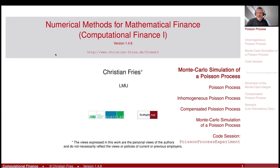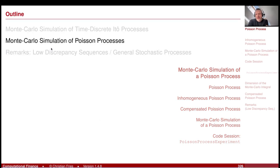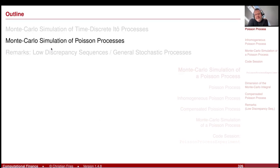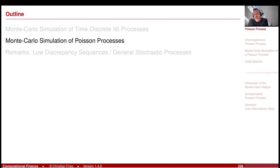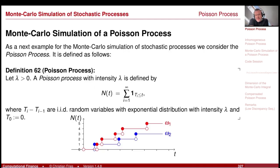Welcome to numerical methods. Another nice example of a Monte Carlo simulation of a stochastic process is that of a Poisson process. I like to show this to you because it is so different from what you do for the time-discrete Itô stochastic process. So first, what is a Poisson process?